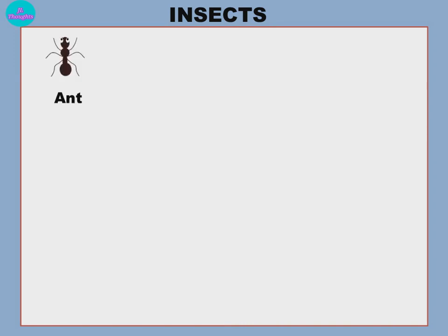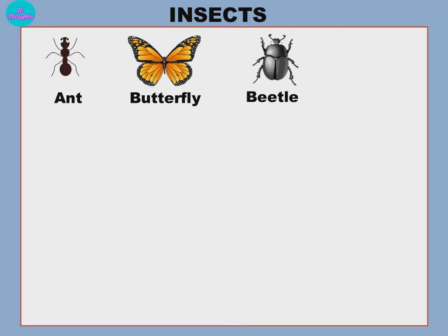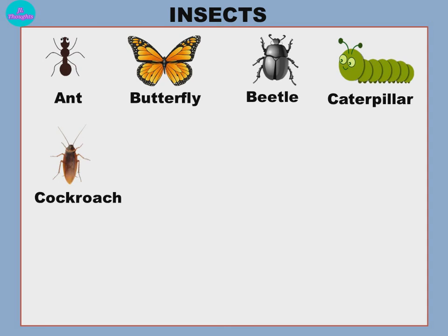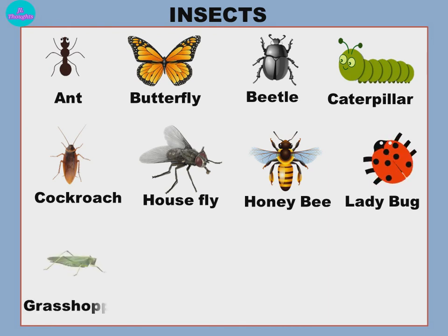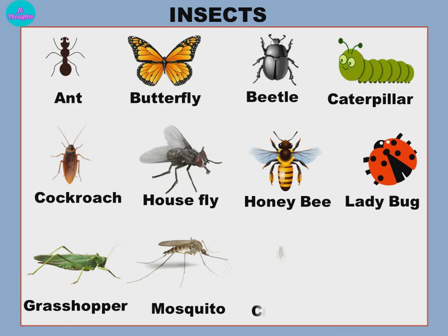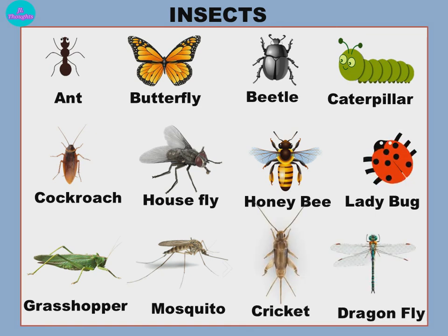Now let's repeat the names of the insects once again. Ant, Butterfly, Beetle, Caterpillar, Cockroach, Housefly, Honeybee, Ladybug, Grasshopper, Mosquito, Cricket, Dragonfly.